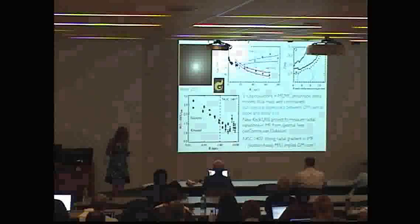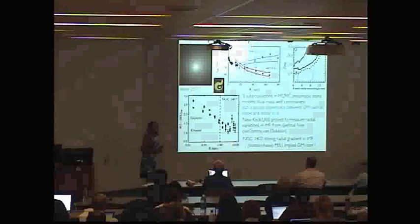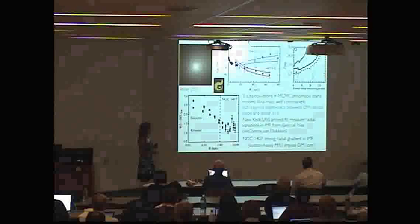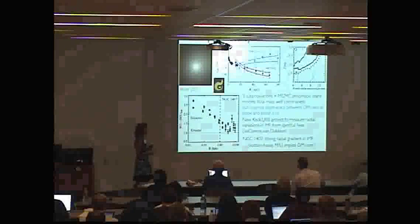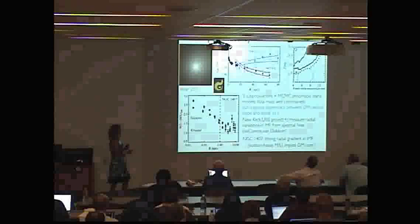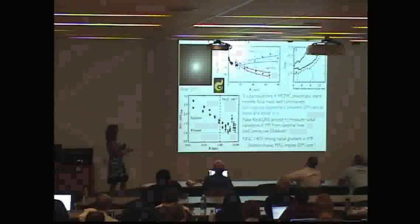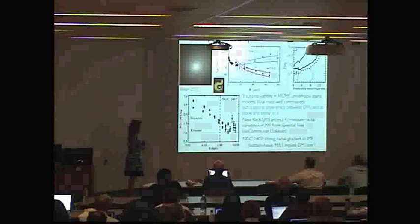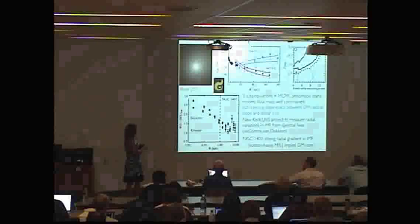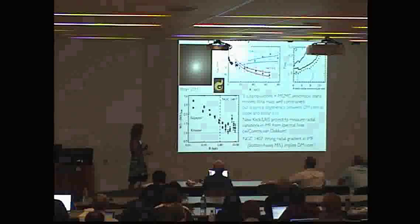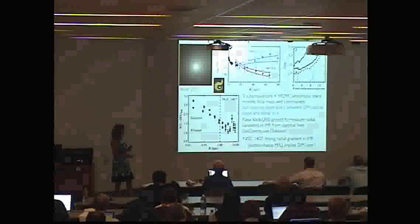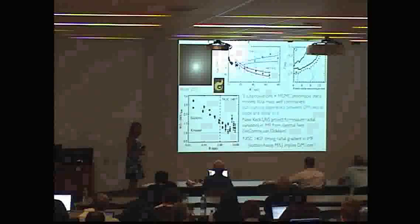The way we're attacking that is with a new project where we're using Keck, this time LRIS, to measure radial variations in the initial mass function. We're getting those IMF indicators from the spectral lines. This work is being done with Charlie Conroy and Pieter van Dokkum. You can see we've done several galaxies - this is one of them, the same galaxy NGC 1407 - where you can see the mass-to-light ratio has a steep central gradient. This is radius versus mass-to-light ratio over the Milky Way mass-to-light ratio, and this suggests we have a bottom-heavy IMF and implies that in this galaxy we have a dark matter core.